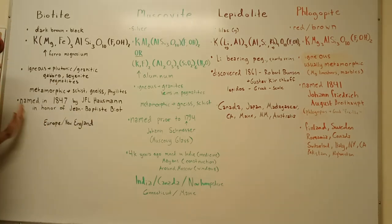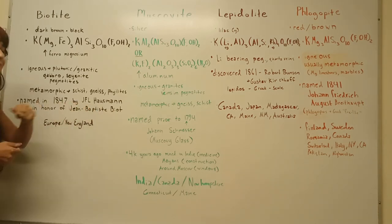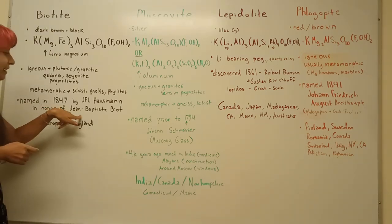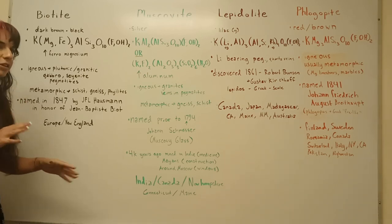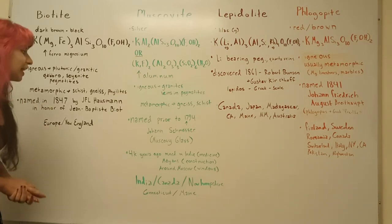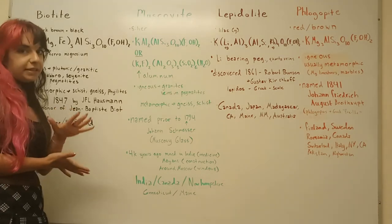This guy was named in 1847 by J.F.L. Haussman in honor of John Baptiste Biot, Biot, don't know, it's French. But this guy was a famous physicist, astronomer, meteorologist, very science-y guy at the time. And he was doing research on the optical properties of mica.